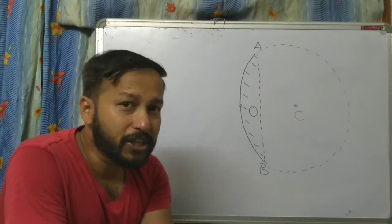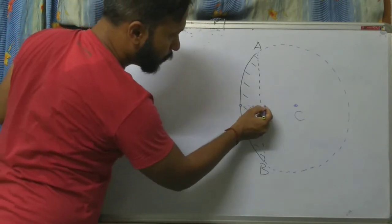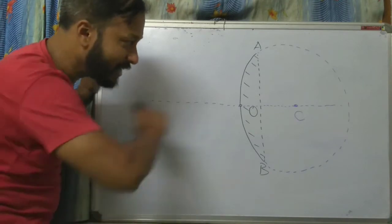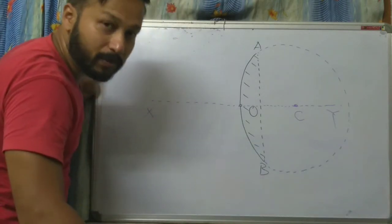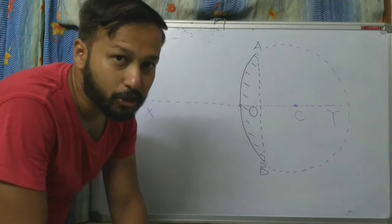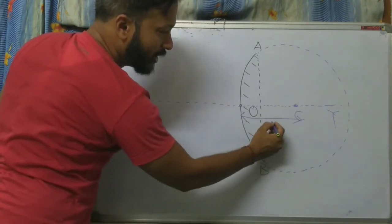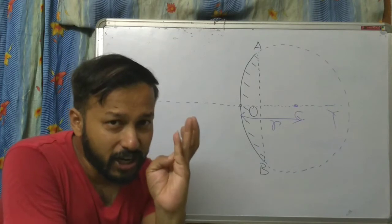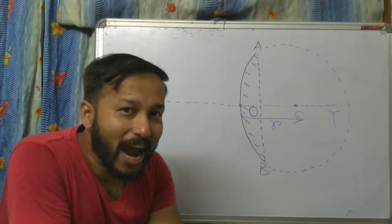Now we draw a line passing through the pole and the center of curvature — this line is called the principal axis. The distance between the pole and the center of curvature is called the radius of curvature R. So we have discussed: radius of curvature, center of curvature, pole, principal axis, and aperture.